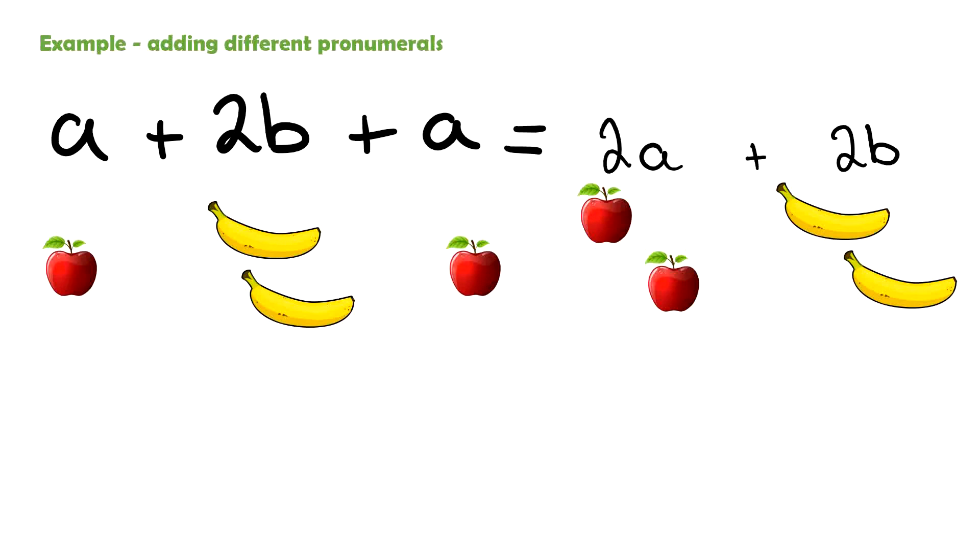And that's some sort of a mistake that some people beginning with algebra seem to make, they feel like they have to have one expression or one answer at the end. 2a plus 2b is as small as you can get it. Therefore, that is our answer. 2a plus 2b. Two apples and two bananas.